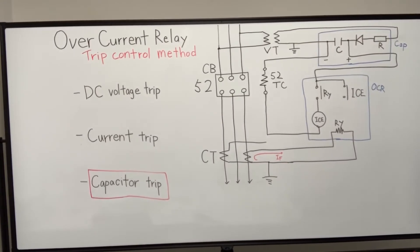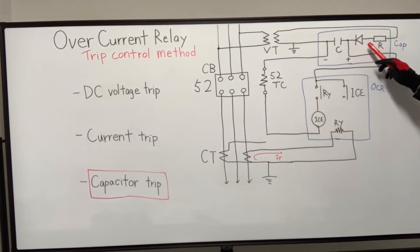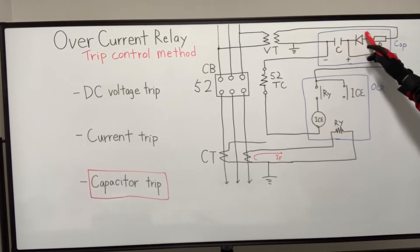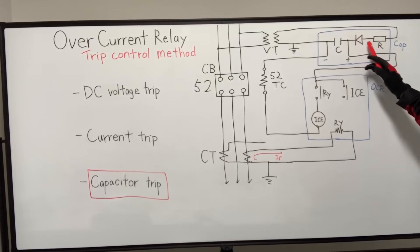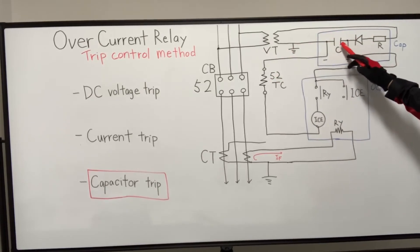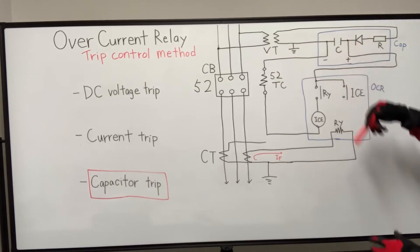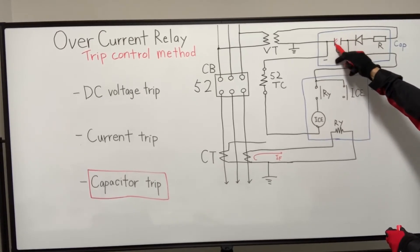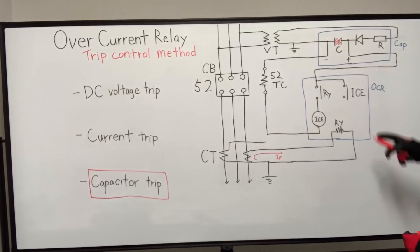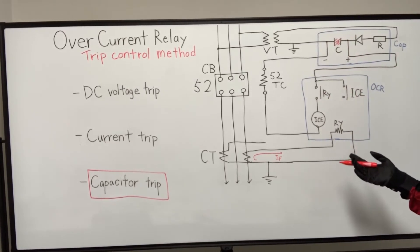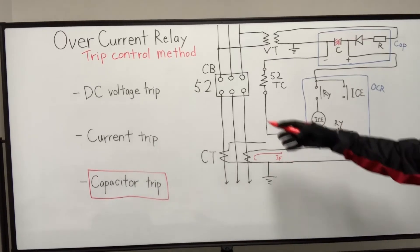The last one is capacitor trip. In this manner, there are diode and capacitor in the house. And the diode can rectificate AC to DC. Power system AC to control circuit DC. And DC is charged in this capacitor. And trip coil will be energized by using this charge. Other than that, it's the same principle as DC voltage trip.